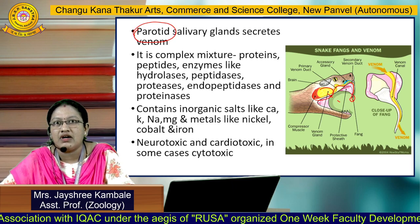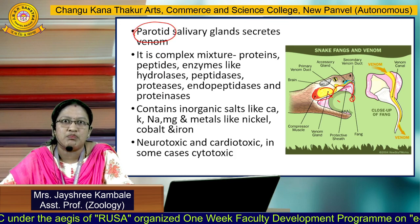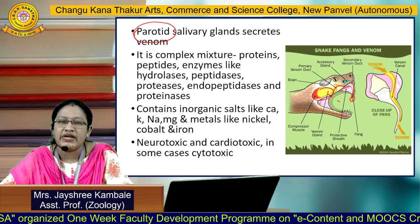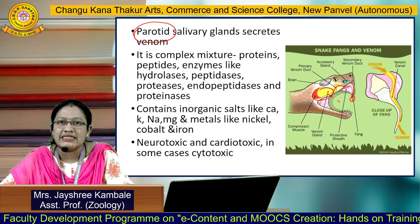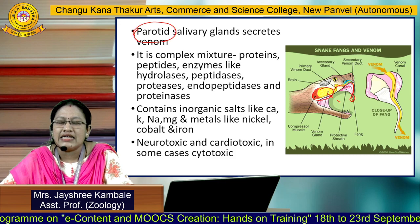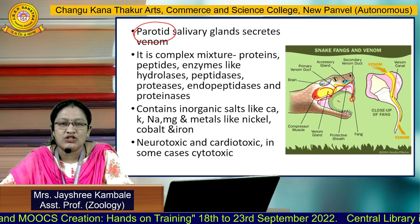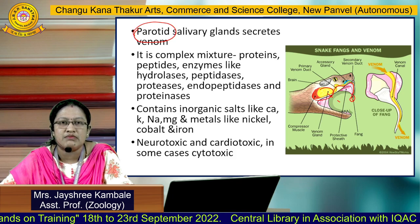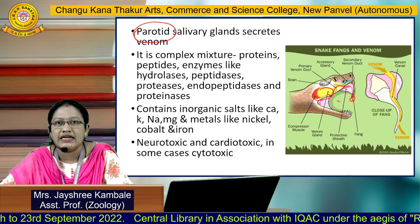The venom of the snake is a complex mixture which contains proteins, peptides, and enzymes like hydrolases, peptidases, proteases, endopeptidases, and proteinases. Along with that, it also contains inorganic salts like calcium, potassium, sodium, magnesium, and some unusual metals like nickel, cobalt, and iron. Snake venom is usually neurotoxic and cardiotoxic — meaning it affects the nervous system and ultimately also affects the heart. In some cases, it is cytotoxic as well.